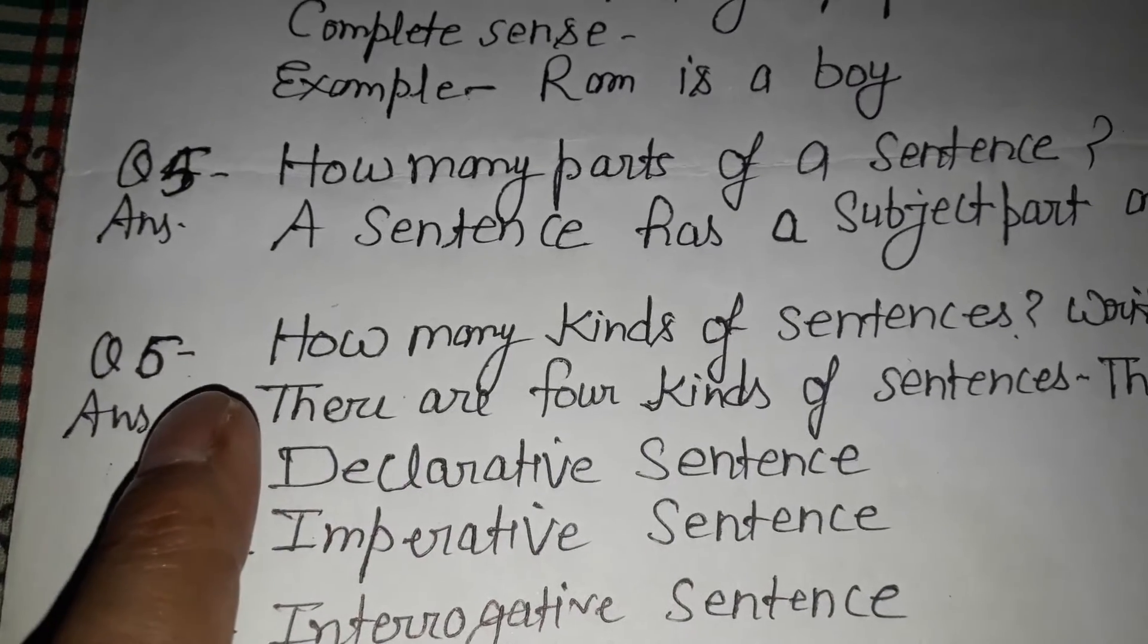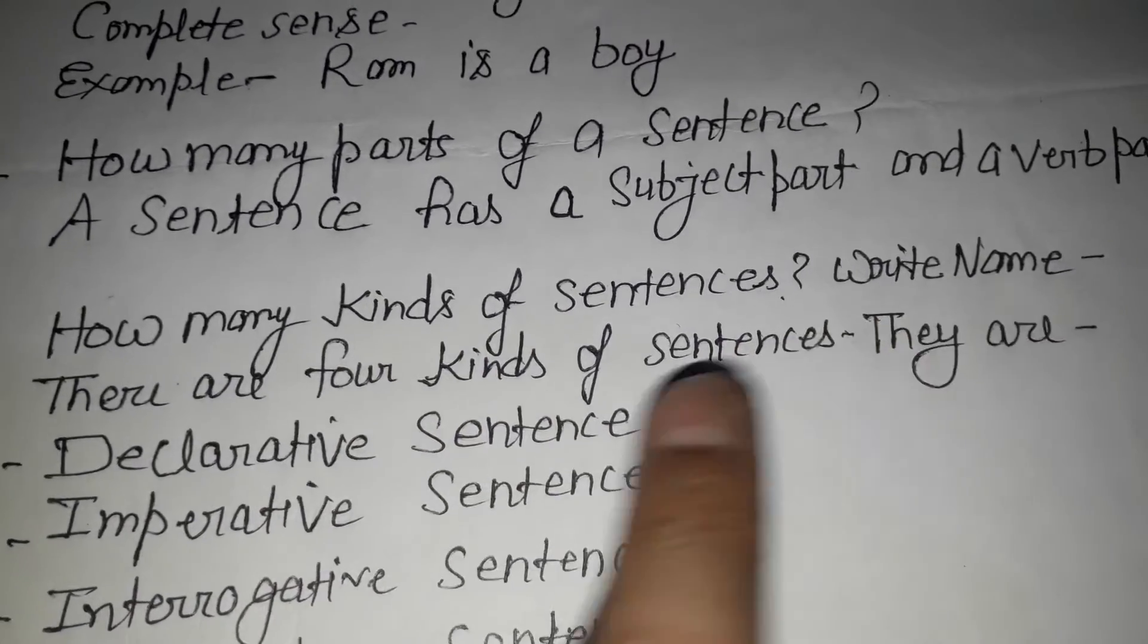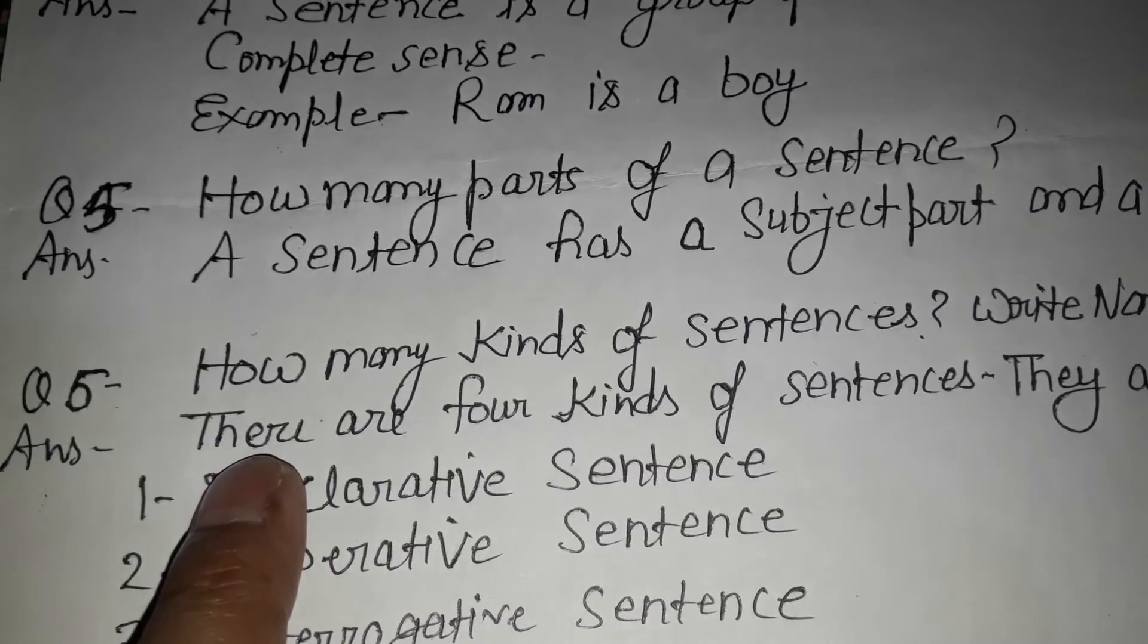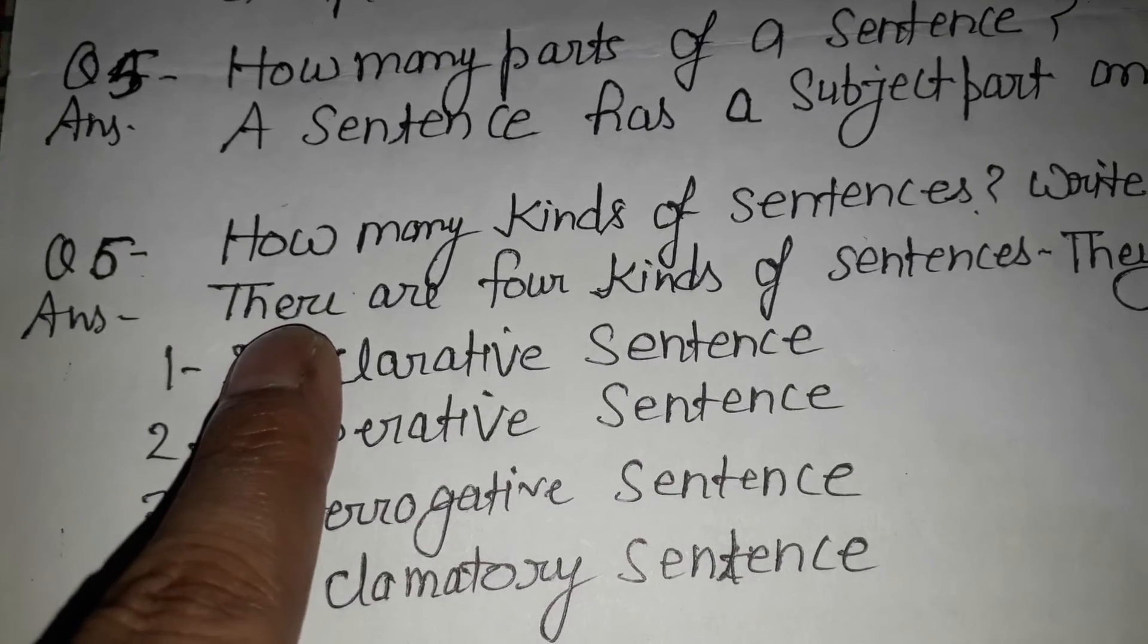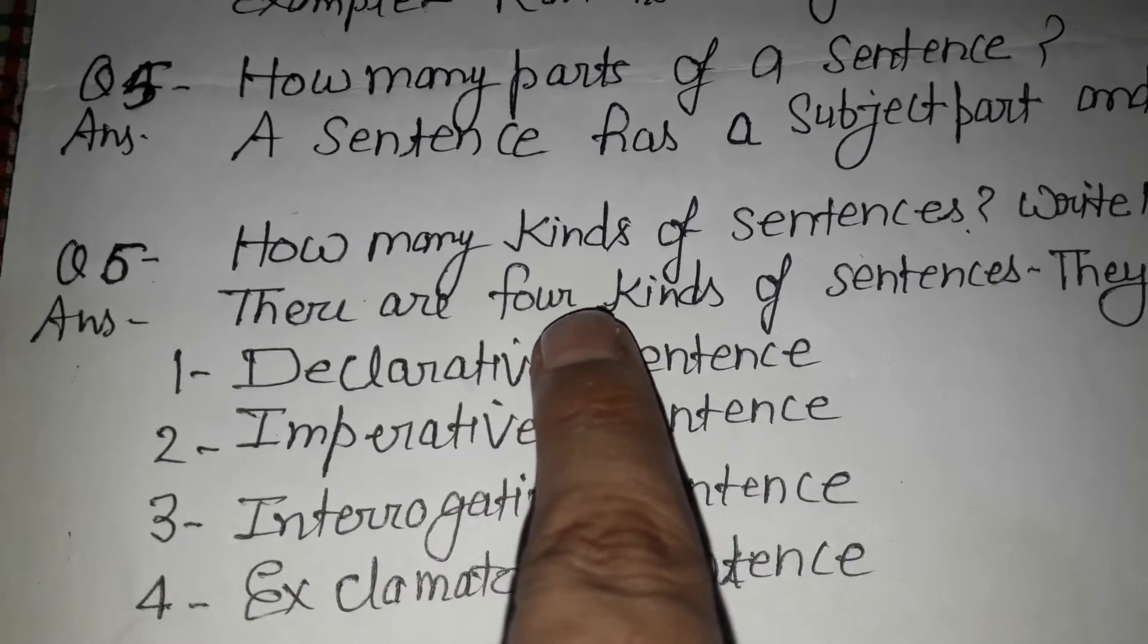Question six. How many kinds of sentences are there? How many types are there? Let us write the names. A sentence is four.